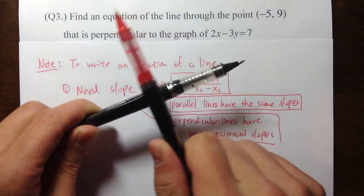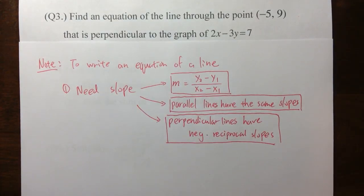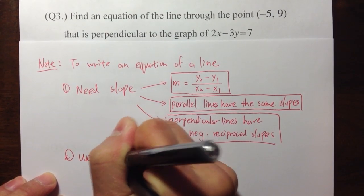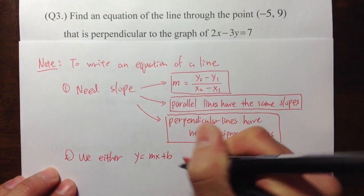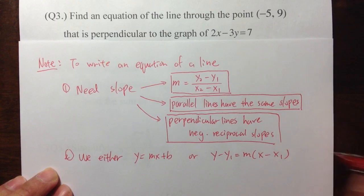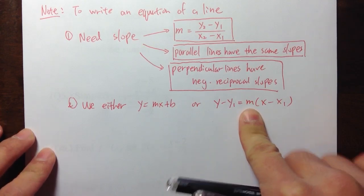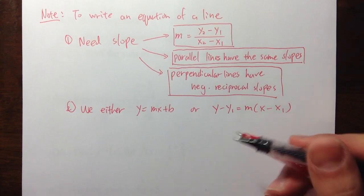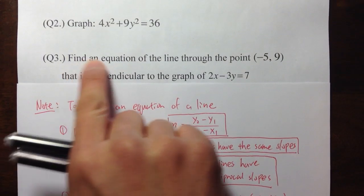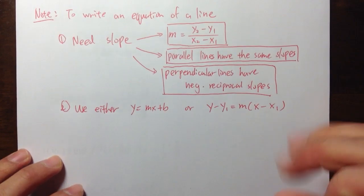The second thing is that we need to use either of the following formulas: y is equal to mx plus b, or y minus y1 is equal to m times x minus x1. The first is the slope-intercept form, and the second is the point-slope form of the line. It depends if there's a specific direction in the question, but usually one of these will be fine. In this case, the question just says find an equation, so either will be fine — and I will do both.